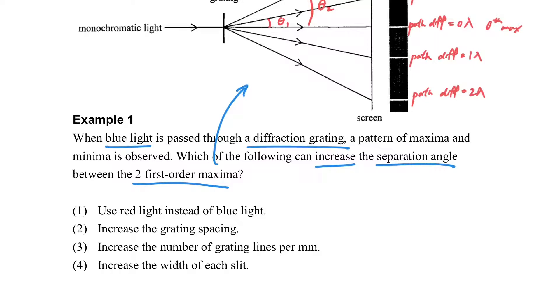You have marked the angle at the top, so actually this is double θ₁, or two times θ₁. This is the separation angle between the two first-order maxima.